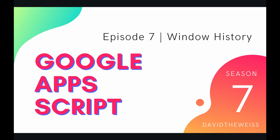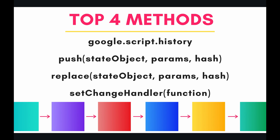Welcome to episode 7 of our HTML service playlist on the Google Apps Script course. In this video we're going to be talking about Apps Script's Window History API. This API's main purpose is to allow us access to the browser window history stack. This is analogous to the HTML DOM's window.history API, and if you're familiar with that in modern JavaScript, you'll be well prepared to tackle this google.script.history API.